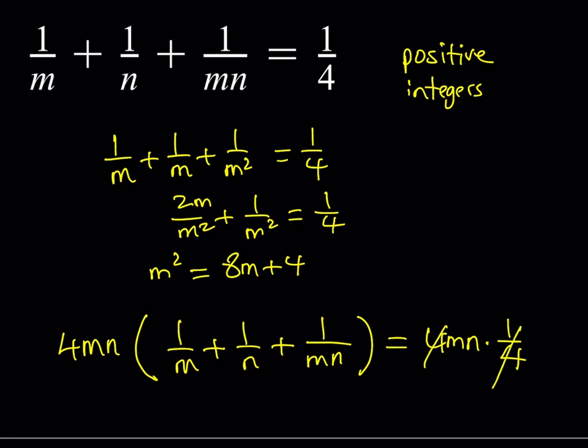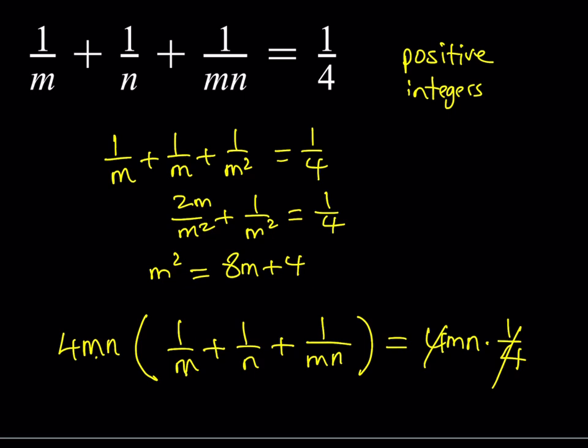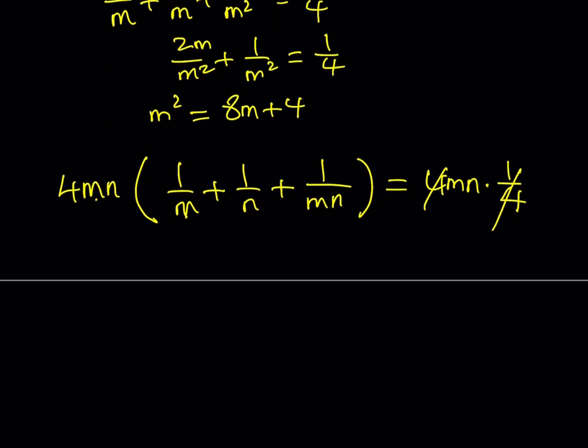And when you distribute this, you're going to notice that the m's are going to cross cancel out, and then n is going to cross cancel, so on and so forth. So we should be getting from here 4n + 4m + 4 = mn.